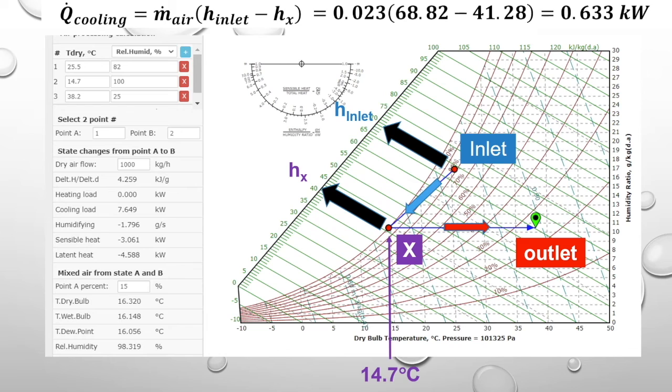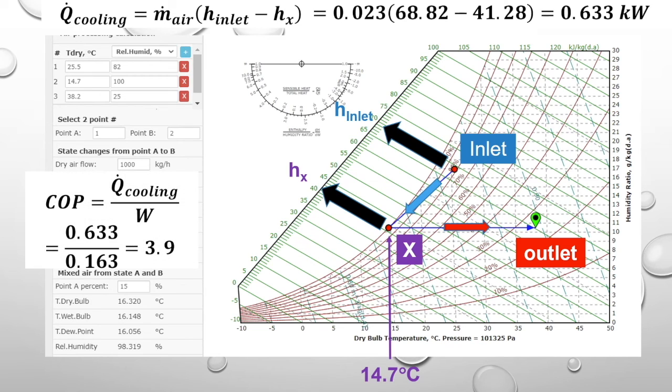Since the coefficient of performance of the refrigeration cycle is the cooling capacity divided by the applied power, so it is 0.633 divided by 0.163, which is about 3.9 here. We can see that the COP here is relatively reasonable.